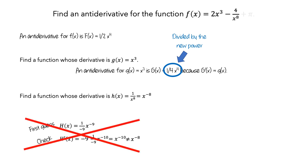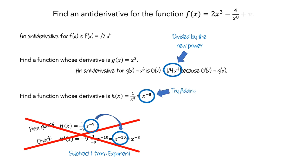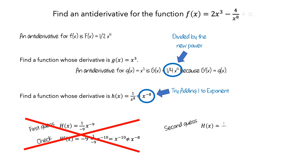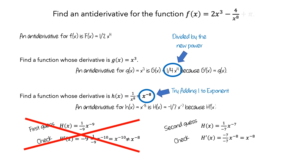So this guess didn't work. If we look at the exponents for big H and H prime, when we use the power rule we subtracted 1 from the exponent. For x to the negative 8, we need an antiderivative, so let's try adding 1 to the exponent. For our second guess, let's add 1 to negative 8 to get negative 7, and multiply by 1 over negative 7. To check our guess, we compute the derivative of capital H, and after simplifying we get x to the negative 8, which is equal to little h. So an antiderivative for little h of x is negative 1-seventh x to the negative 7, because the derivative of capital H is lowercase h.